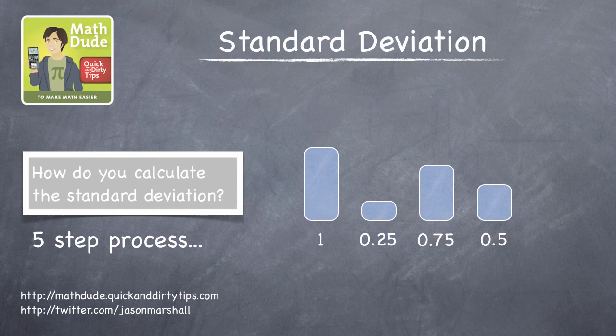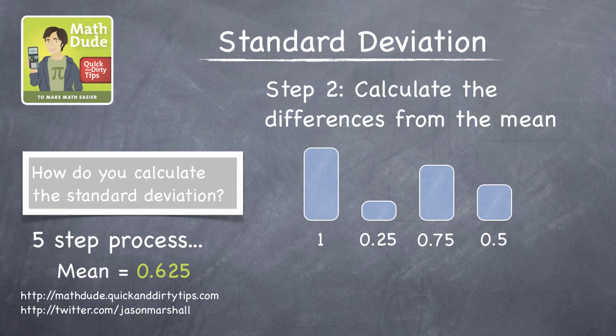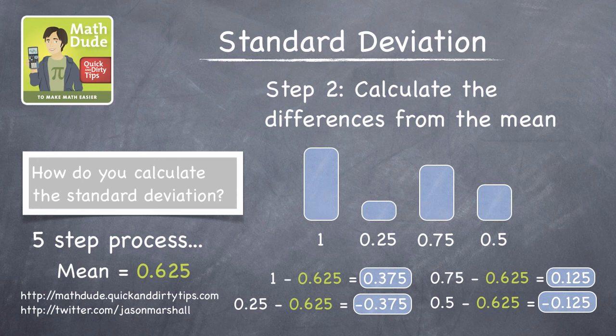Step two is to calculate the difference between the height of each glass of water and the mean height. These differences are 0.375, negative 0.375, 0.125, and negative 0.125.